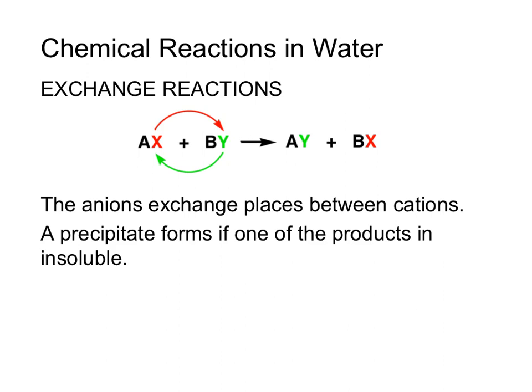When looking at precipitation reactions, they're most often going to happen in what we call an exchange reaction. In an exchange reaction, the anions that are present will trade places and combine with the other cation. In other words, in the example here, X is with A in the reactants; however, X will now be with B in the products. Likewise, Y will switch places and instead of being with B in the reactants, it is now going to be with A in the products. Let's take a look at an example.